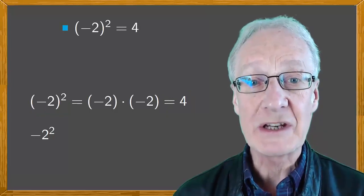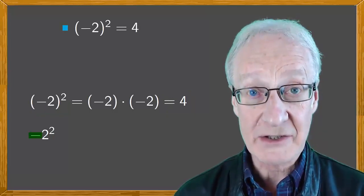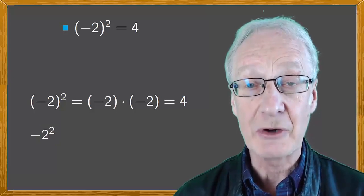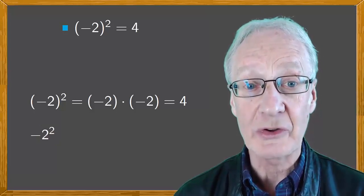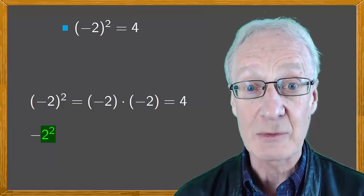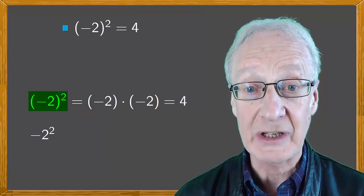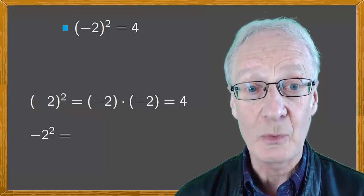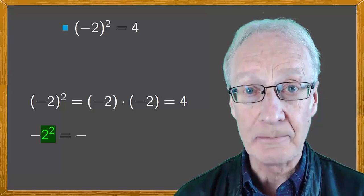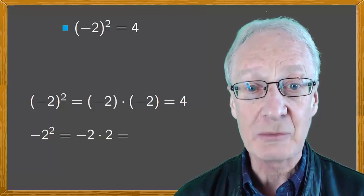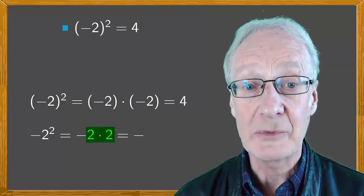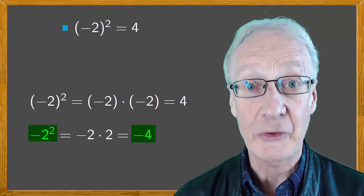However, the situation is different with -2². Notice that here there are no parentheses, so the square only affects what is immediately to the left. Otherwise, we'd have (-2) in parentheses. So we leave the minus as it is and just square the 2. The result is, we just write down the minus and then do 2 × 2, which is 4. So there we have it.